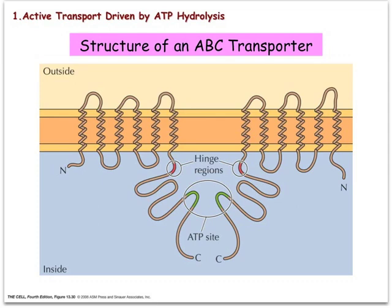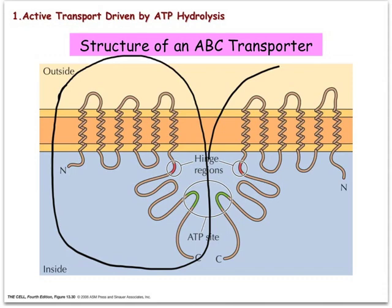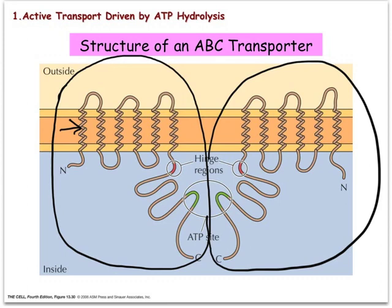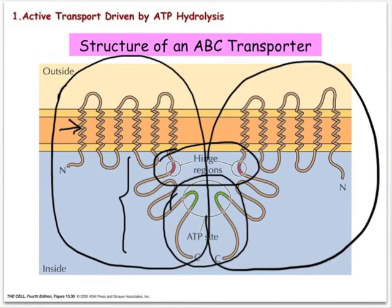The basic structure of the ABC transporters is very well conserved throughout the evolutionary scale. All of these proteins have two copies of the same structure, so they are dimeric proteins, and they all contain six transmembrane domains. In addition, the cytosolic region of the protein contains a hinge region responsible for dimer formation, and also contains the ATP binding cassette.